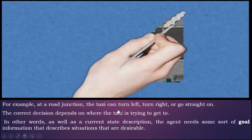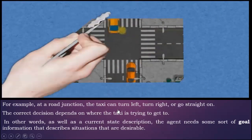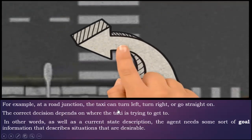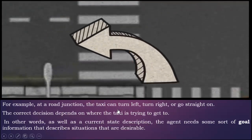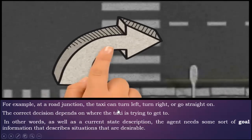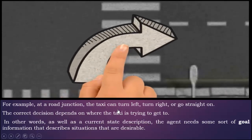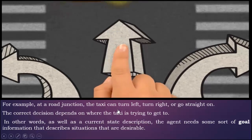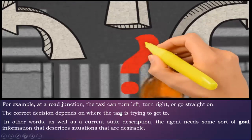Consider the example of a taxi driver agent. With the current state, the agent reaches a road junction and the taxi can turn left, turn right, or go straight on. In this situation, the model-based reflex model is not sufficient to take the right decision. We should have a specific goal on which behalf the agent would be able to take the right decision.